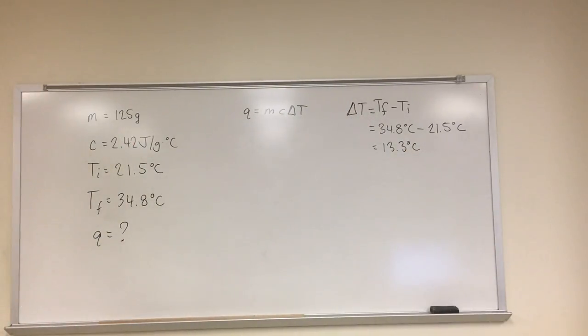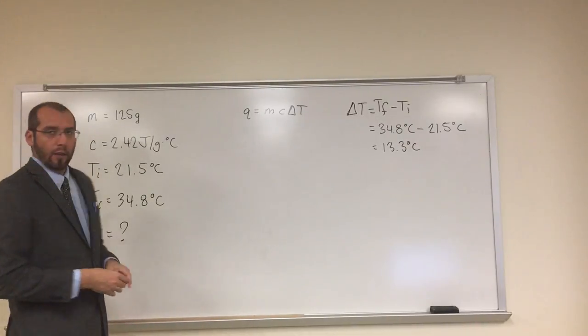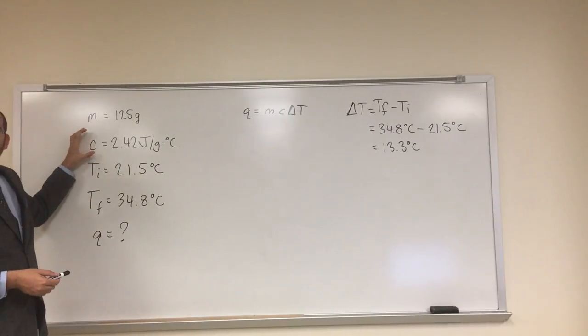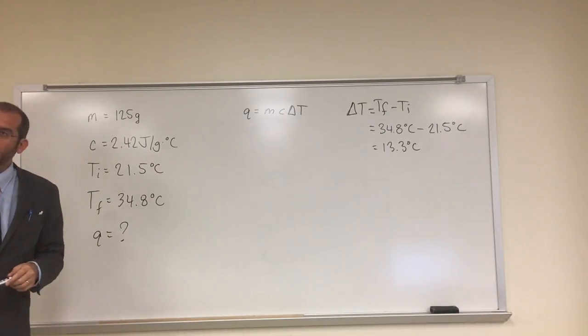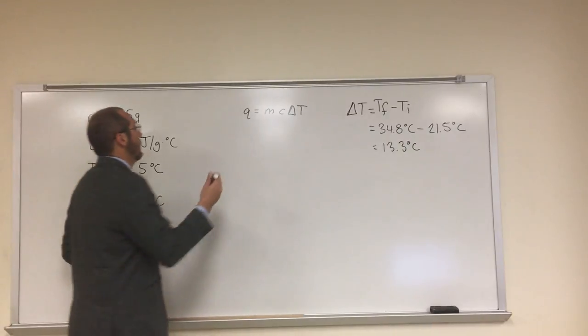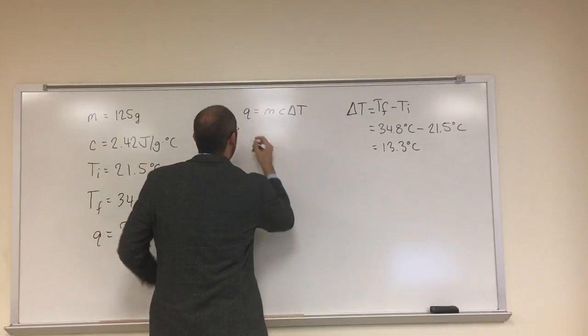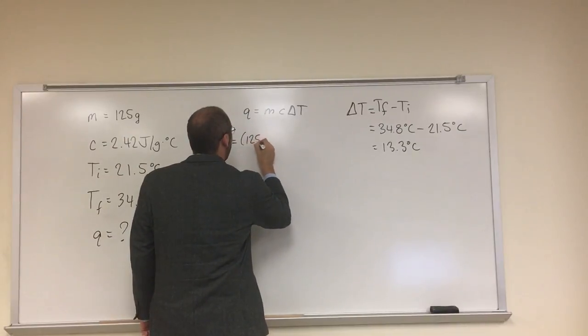And now it's just a little bit of a plug and chug type problem. But I like to show when we're doing these problems to expand specifically the specific heat portion so you can show the canceling of your units. So in that case, we're going to say Q equals M. We've got M at 125 grams.